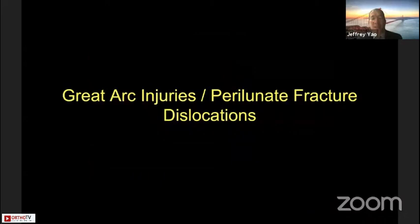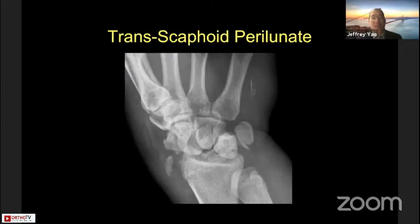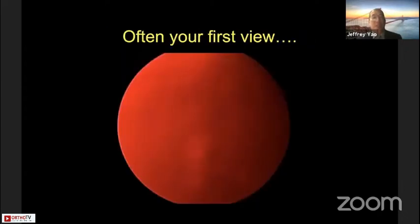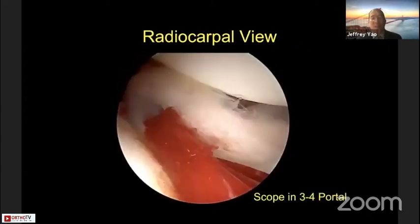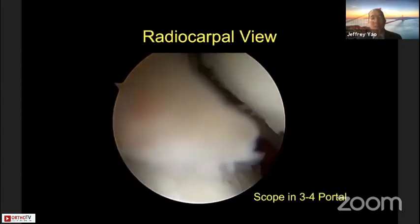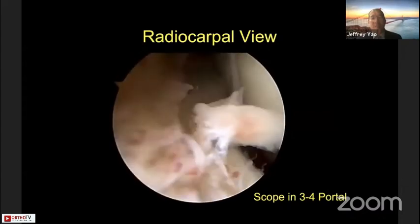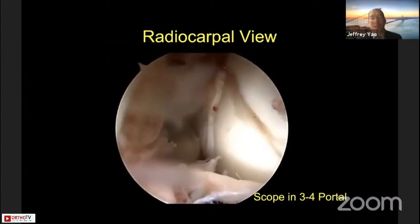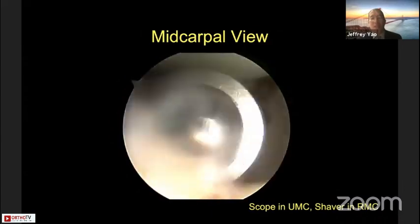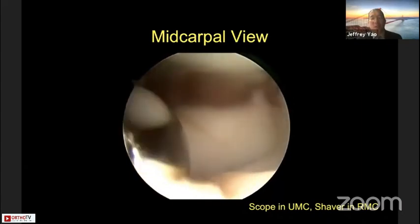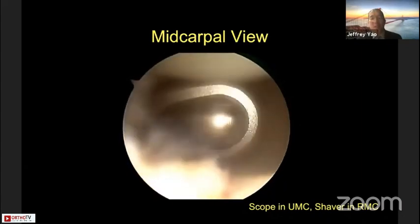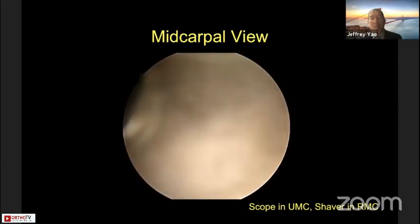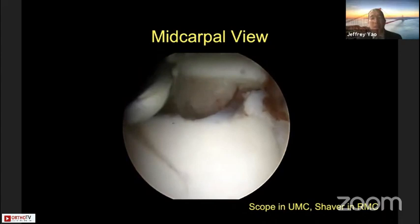For perilunate fracture-dislocations — greater arc injuries — such as the trans-scaphoid perilunate, we can still manage these arthroscopically. Your first view is often obscured by blood, so you need to evacuate the hematoma. Once done, you can assess the ligaments as well as the fracture. Viewing through the 3-4 portal, you can see complete disruption of the ligamentous attachments and the scaphoid fracture. From the mid-carpal view, you can remove synovium — I prefer dry arthroscopy in fracture settings — and visualize the fracture.